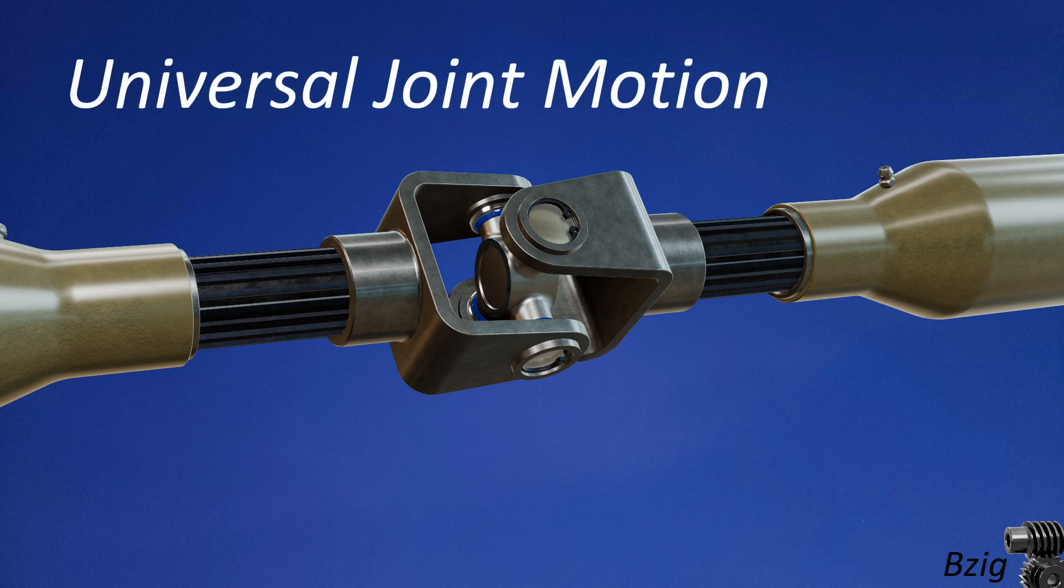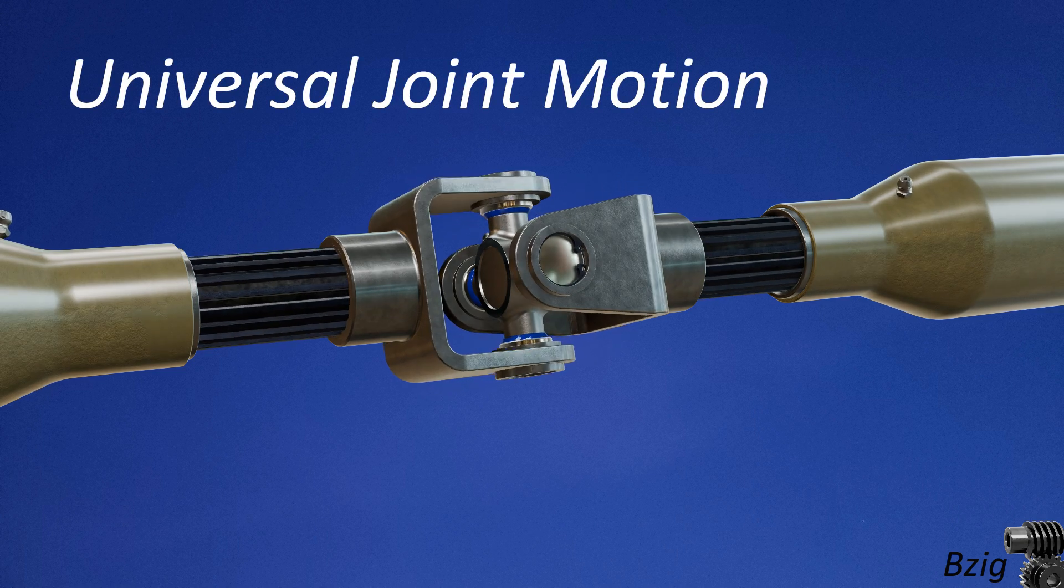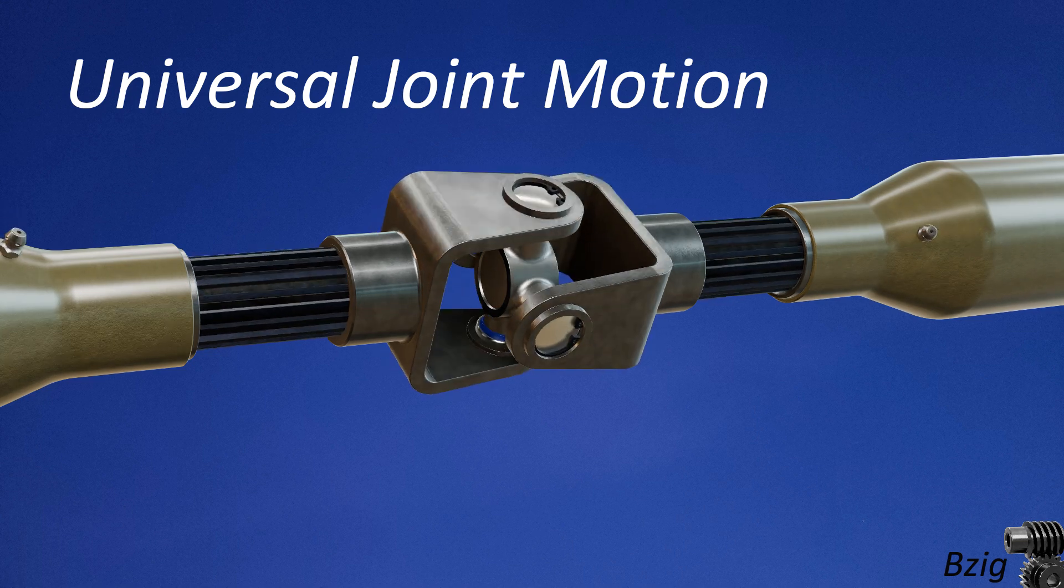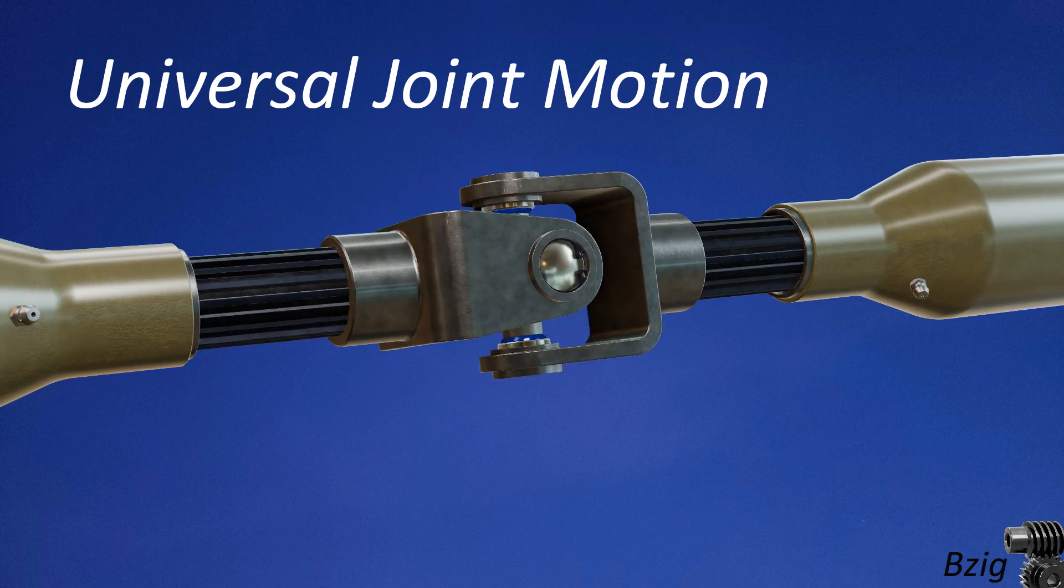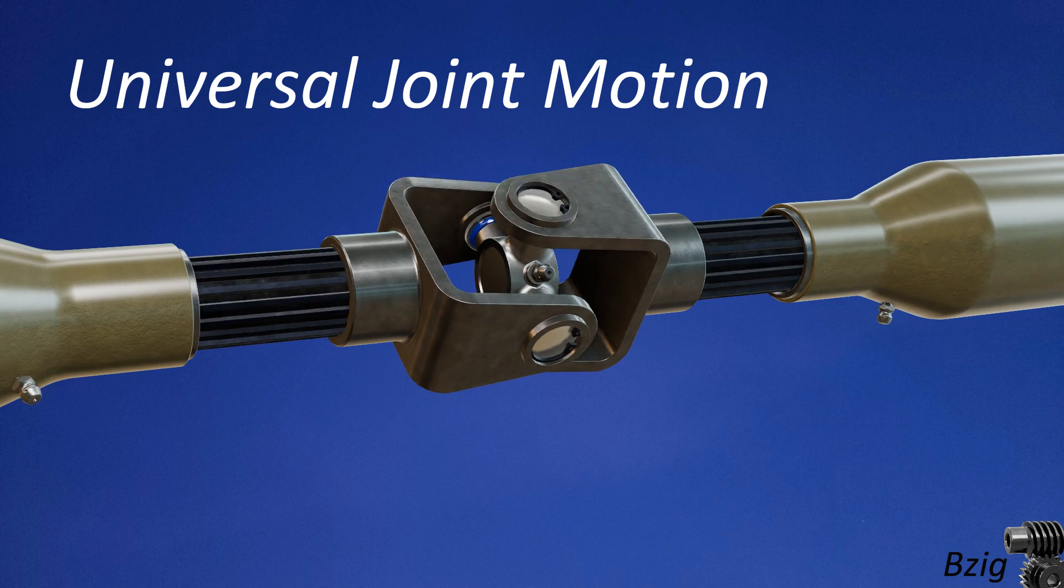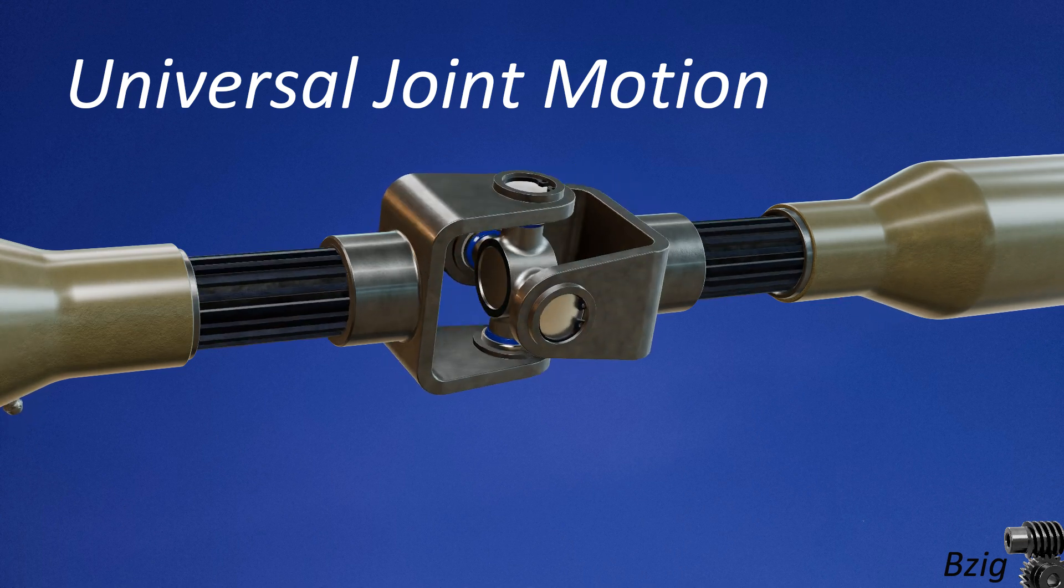Today's simulation is two driveshafts connected by a coupling. This coupling is known as a universal joint, and its purpose is to allow the transfer of rotational motion from one driveshaft to another, while also allowing for axial misalignment.